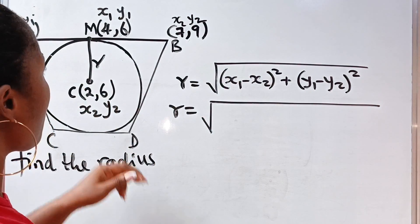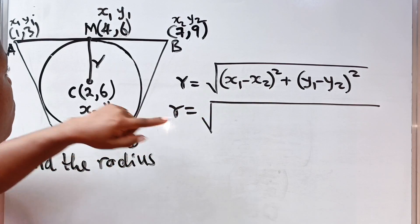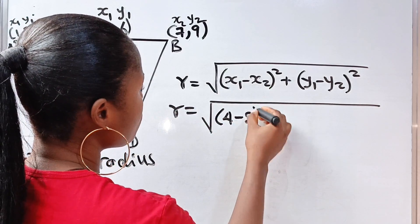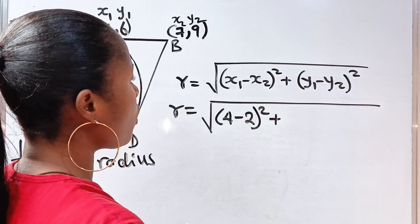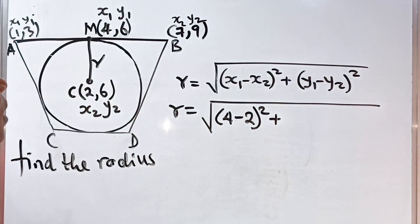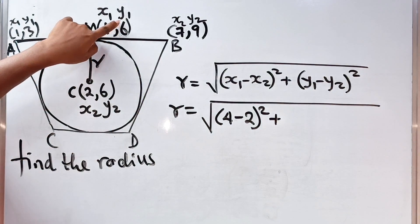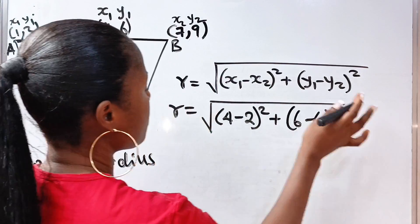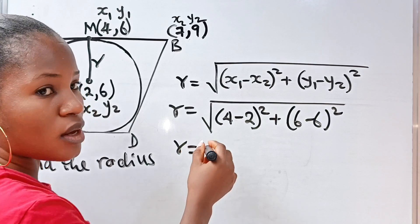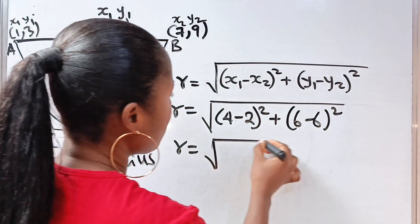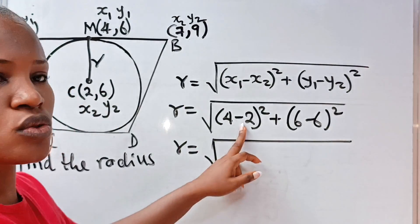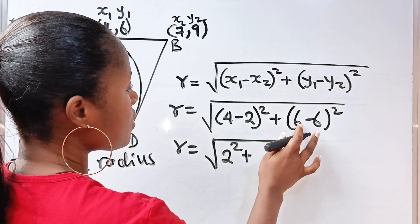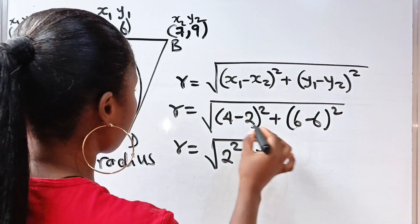Now, x1 minus x2, that is 4 minus 2, 4 minus 2 squared plus y1 minus y2, 6 minus 6, 6 minus 6 squared. So, the radius is equal to the square root of 4 minus 2 is 2, so we have 2 squared plus 6 minus 6 is 0, we have 0 squared.